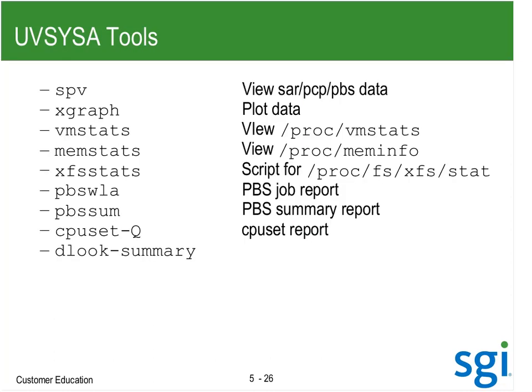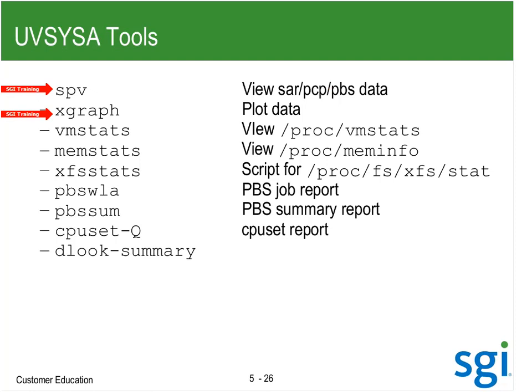I've got some of my own tools — something called SPV to plot SAR, PCP, and PBS data. I'll use that tomorrow. It calls a plotting package called Xgraph. I wrote this back in Cray Unicos days — Cray Unicos came with Xgraph built on the system, didn't have GNU plot by default, and I built everything around Xgraph. SPV is a TCL script that runs the SAR command, grep and awk, then puts it into an Xgraph format. I can also plot PCP data and PBS data.